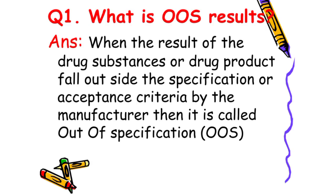Question number one: What is OOS results? The answer is: when the result of the drug substance or drug product falls outside the specification or acceptance criteria set by the manufacturer, then it is called out of specification, OOS.